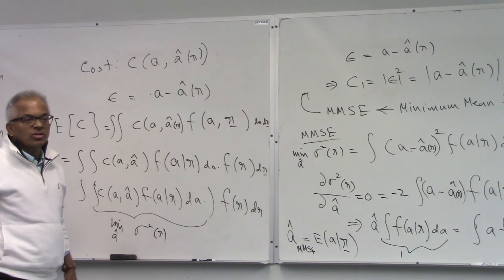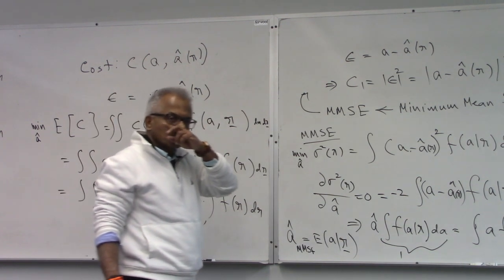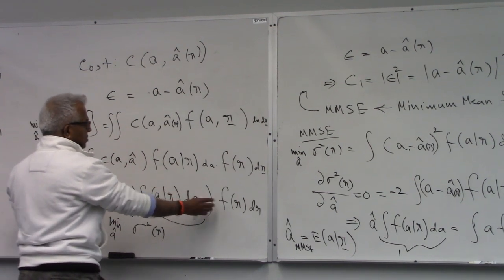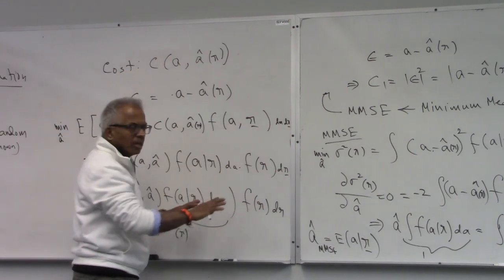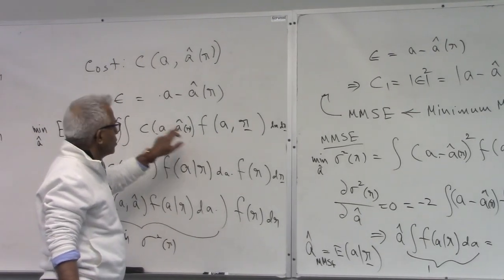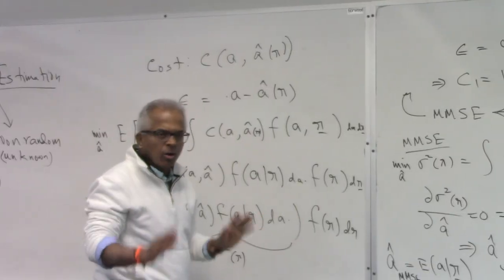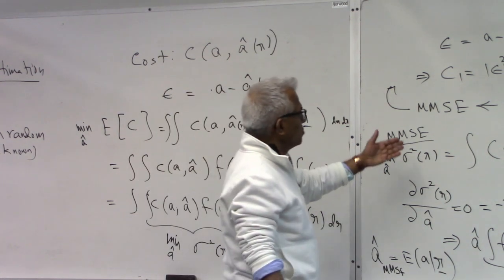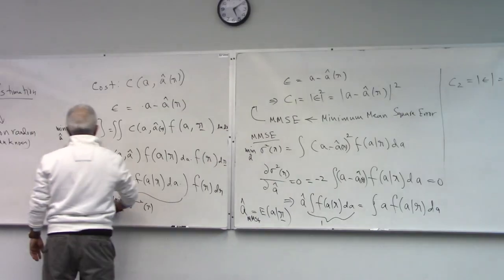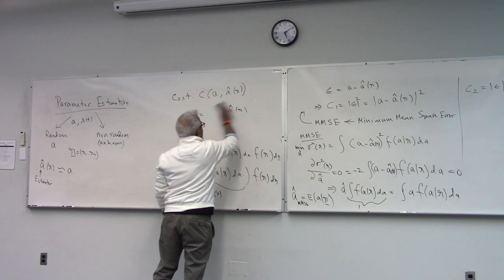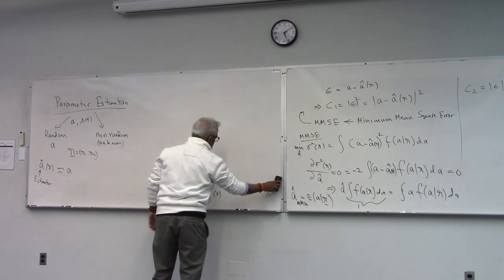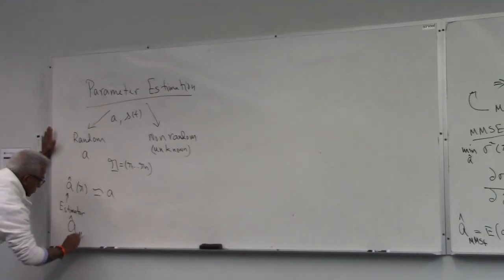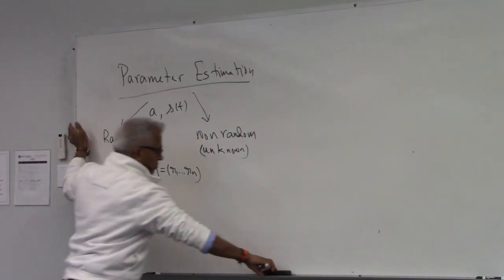The only catch is you need to know the density function. So, A-hat MMSE equals the conditional mean of A given R, E[A|R]. R is the whole data vector. If you want to find the cost associated with that, you take this estimator and substitute it back. The cost turns out to be the expected value of the conditional variance of A given R — this is the minimum mean squared error.